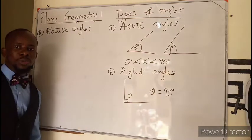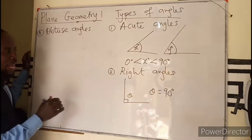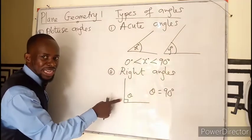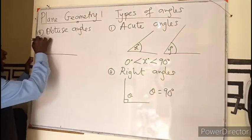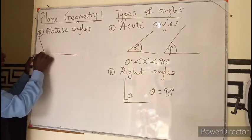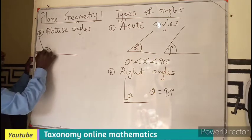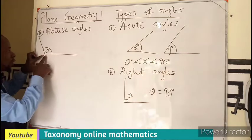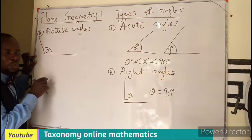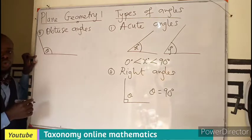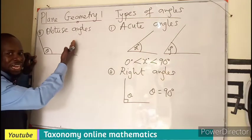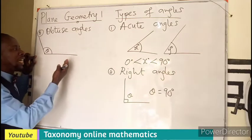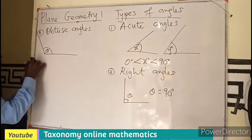So we have obtuse angles. If we have a particular angle which is bigger than 90 degrees but also less than 180 degrees, we call those angles obtuse angles. So angles like 100, 120, 130, 150 degrees — those angles are all obtuse angles.